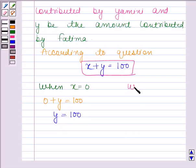When Y is equal to 0, then the given equation reduces to X plus 0 is equal to 100, and this implies X is equal to 100.